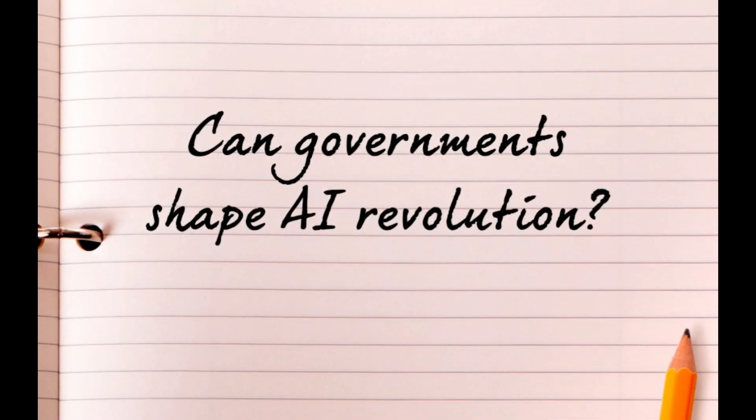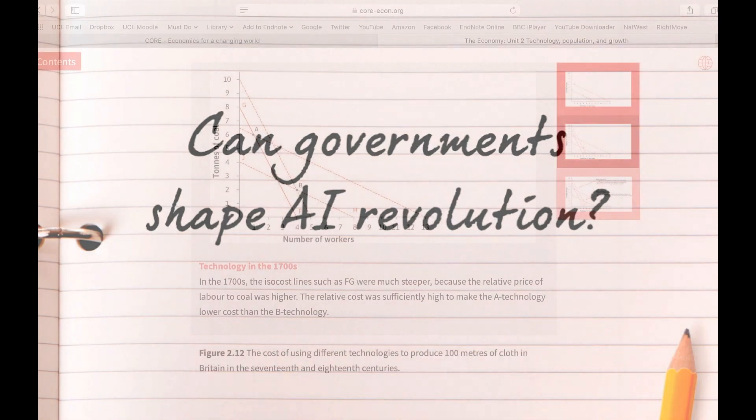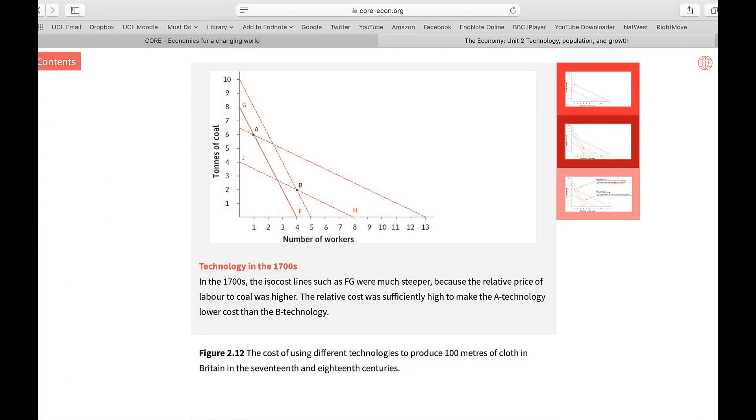Can governments shape the advancements in AI in a way that we end up with technologies that benefit most people in the society? Now, I believe the simple model of isocost lines and technology can help us to think about this question. So I leave the rest of it to you. Thank you.